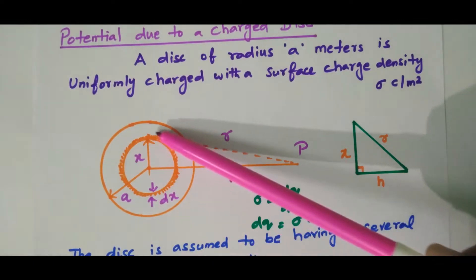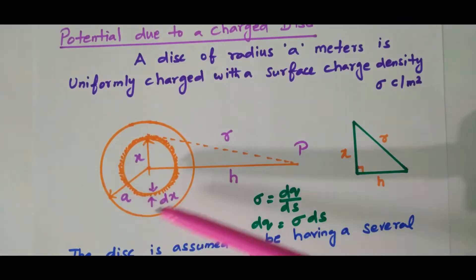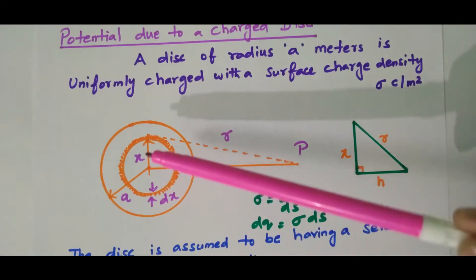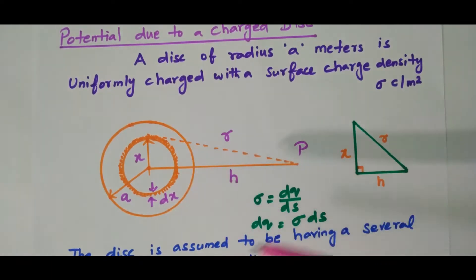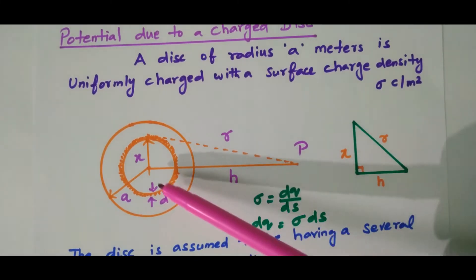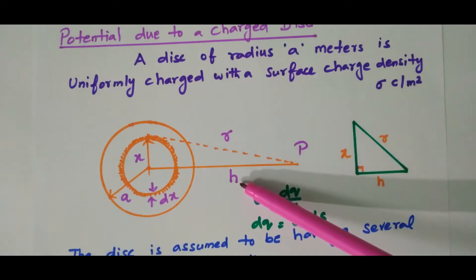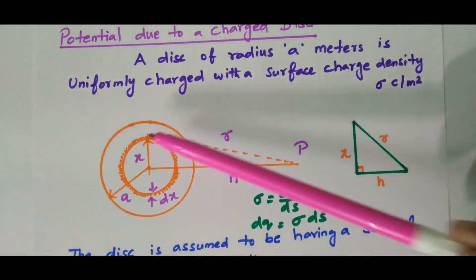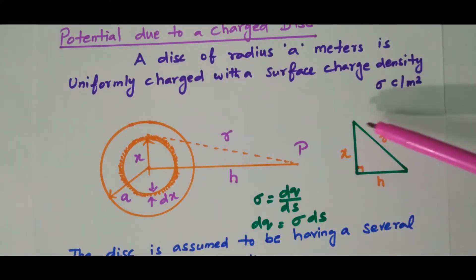We consider one ring at a distance x meters from the center with a thickness dx. The disk has radius A. Our aim is to find the potential at point P, which is at a height of h meters from the center of the disk. The distance between the small ring segment and point P is r meters. A triangle is drawn separately using h, x, and r, which will be used during the calculation.